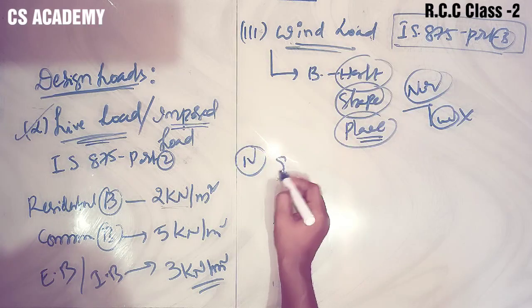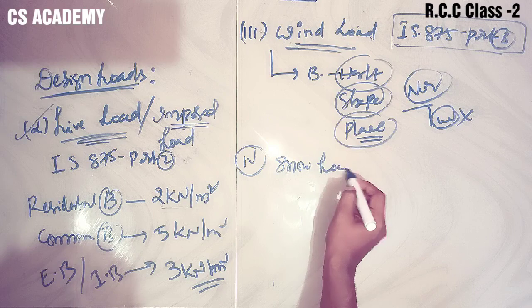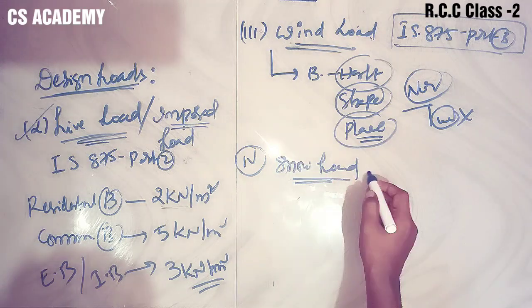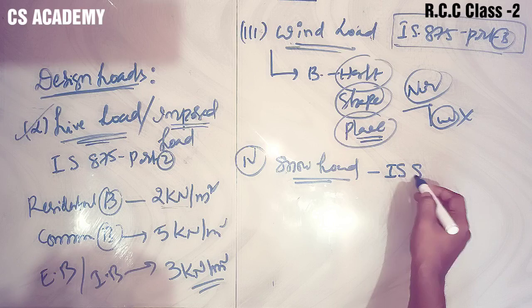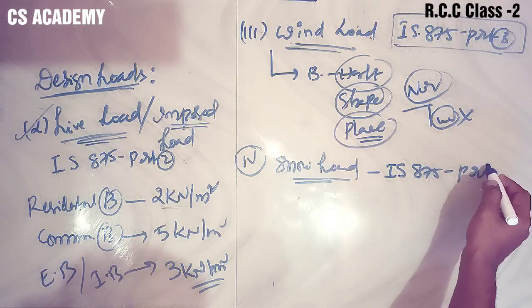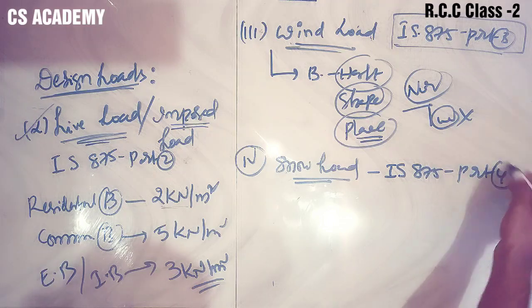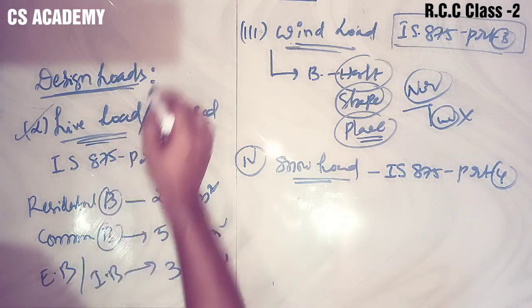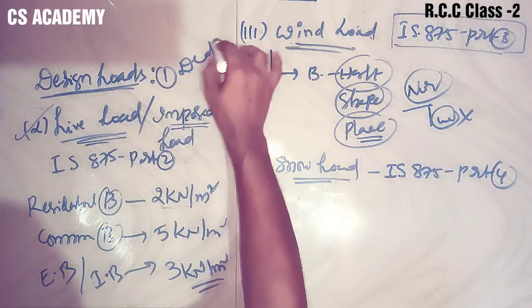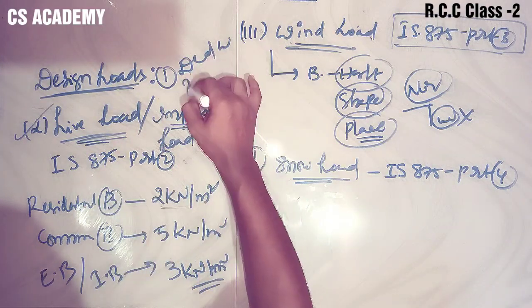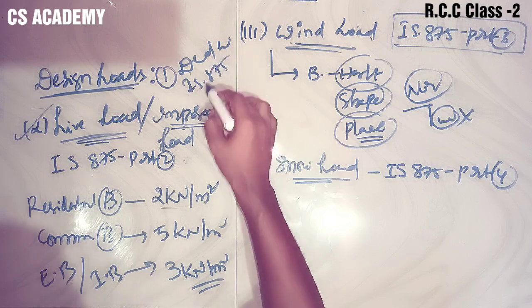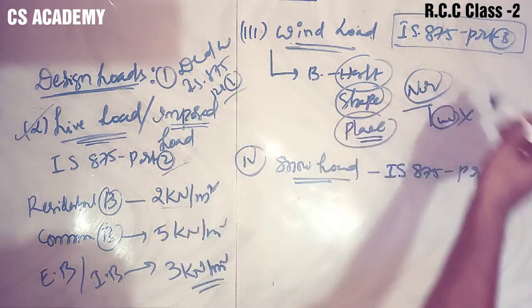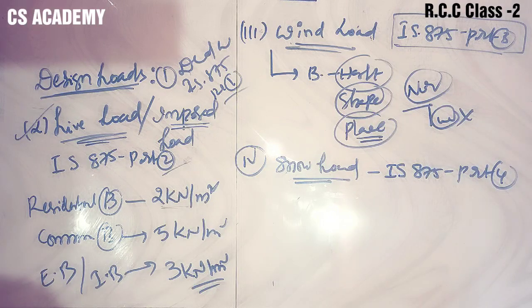The fourth important load is Snow Load. Snow load is from Indian Standard IS 875 Part 4. These four parts are very important: Part 1 for dead load, Part 2 for live load, Part 3 for wind load, Part 4 for snow load. These are the key design loads.